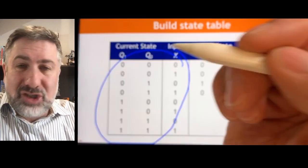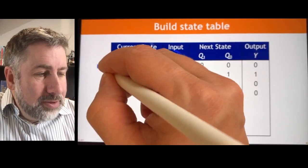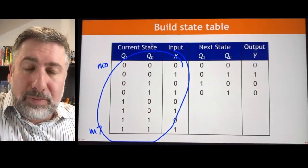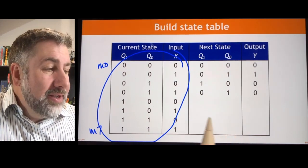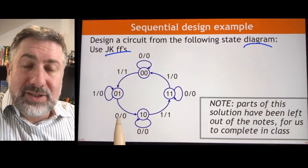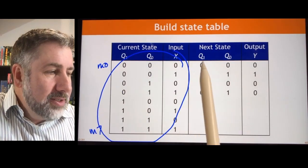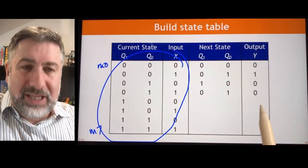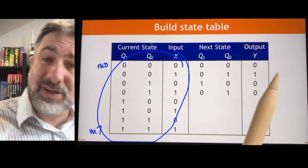This is just an exhaustive list of all possibilities — min-term 0 through min-term 7. You just list all possibilities, and then based on the requirements in the state diagram, you generate what the next state should be and what the output should be.